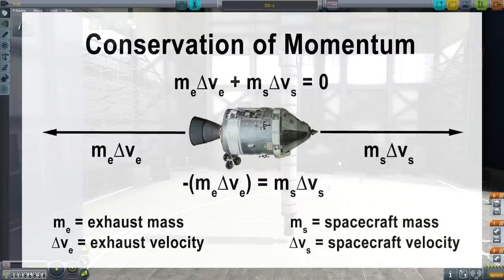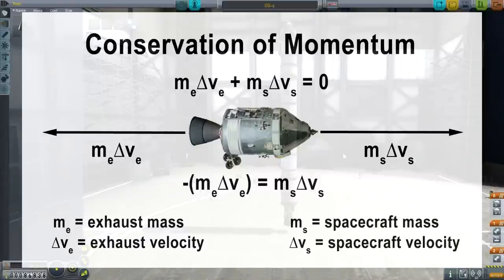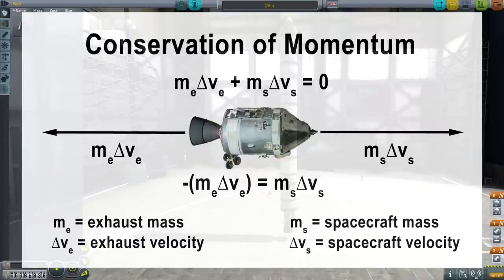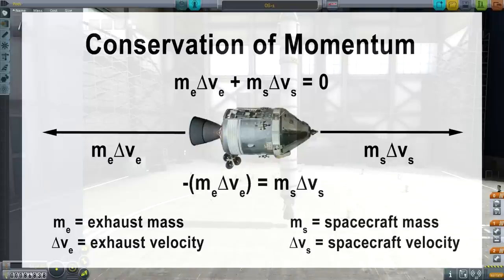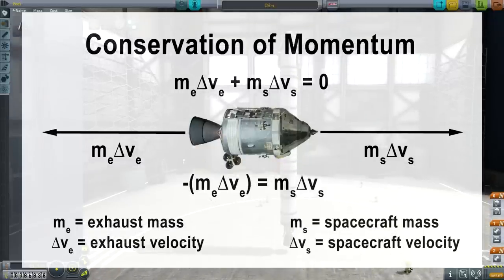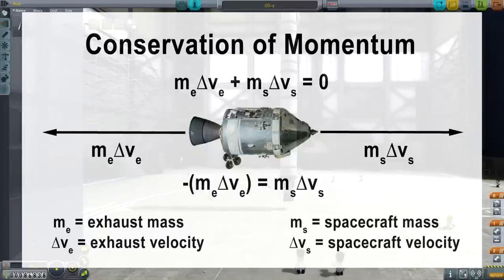This is all theoretical exhaust velocity, because what's really happening with conservation of momentum is a collision — specifically the exhaust is colliding with the nozzle. So the shape of the nozzle is really important to determine how much of the theoretical exhaust velocity you actually capture. The way the engine is constructed is very important in terms of whether you get the theoretical maximum that you could get from your fuel.